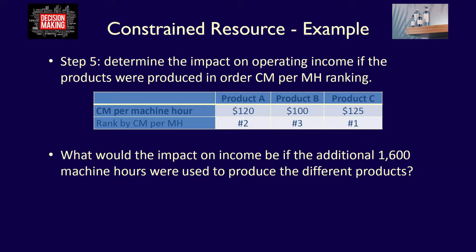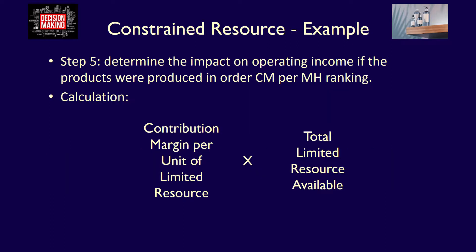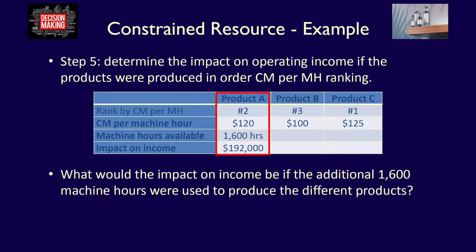To solidify our understanding, let's consider what the company would earn if they used their additional 1,600 machine hours for each of the three products. To calculate the impact on income, we multiply the contribution margin per unit of limited resource by the total limited resource available. For product A, that would be $120 multiplied by 1,600 hours, which equals $192,000. The total contribution margin earned by product A would be $192,000 if we produced only product A with the additional 1,600 machine hours.